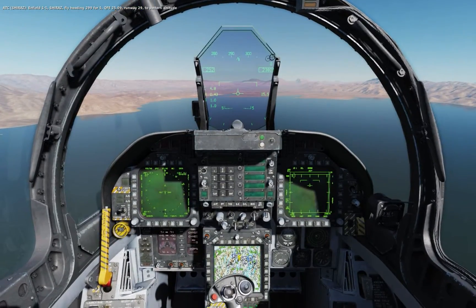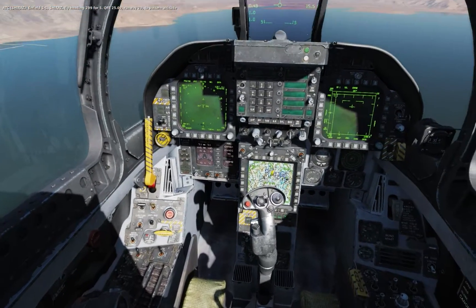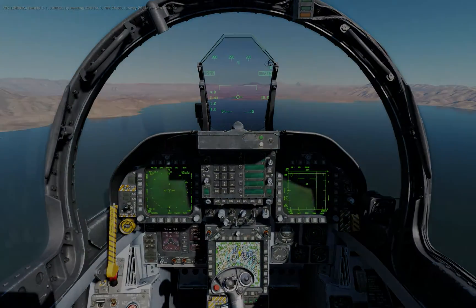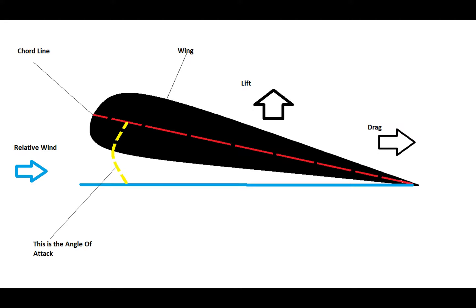Allow me to explain a few aeronautical concepts. Let's talk about angle of attack. Angle of attack is the angle between relative wind and the cord line of your wing. In this diagram, the part shaded in black is the wing. The blue arrow indicates the direction of relative wind, and the red dashed line represents the cord line.